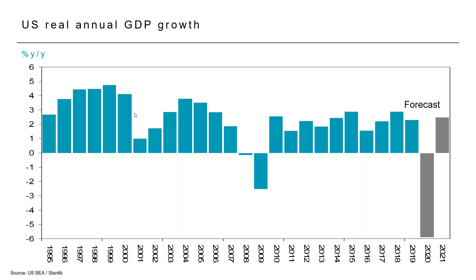In terms of overall US growth, we're looking at minus 6% this year, followed by an increase of about 2.5% next year. The 2.5% may look good but it's coming off an incredibly low base and doesn't take you back to pre-COVID activity levels — that's going to take a number of years. This forecast also assumes you don't have a massive second wave of the virus that forces everybody back into lockdown.